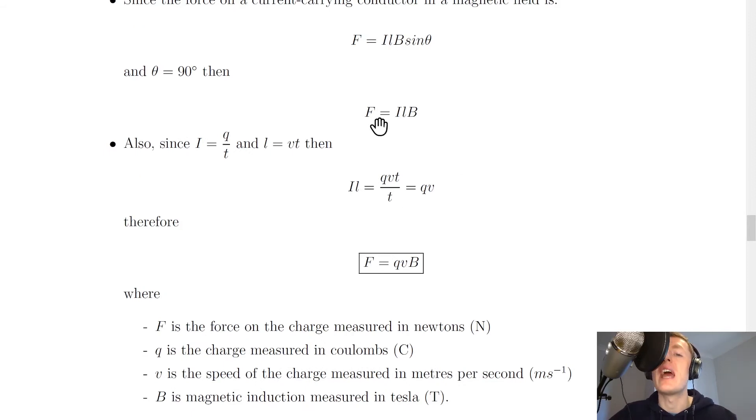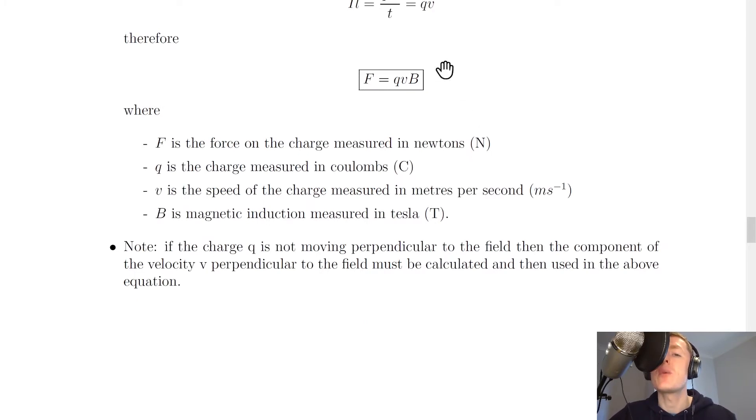So in this expression, F equals ILB, we can simply replace i times l with qv. So we end up with this equation, F equals qvB, where F is the force on the charge measured in newtons, q is the charge measured in coulombs, v is the speed of the charge measured in meters per second,